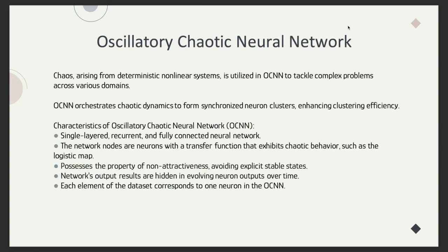Chaos is a phenomenon of complex, unpredictable and random behavior arising from simple deterministic nonlinear systems. Leveraging the principles of chaos and neural networks allows us to solve complex problems in various fields. We direct the chaotic dynamics of the network so that neurons organize themselves into synchronized clusters, where neurons within each cluster oscillate in a coordinated manner, while neurons in different clusters may oscillate independently or demonstrate different synchronized patterns.